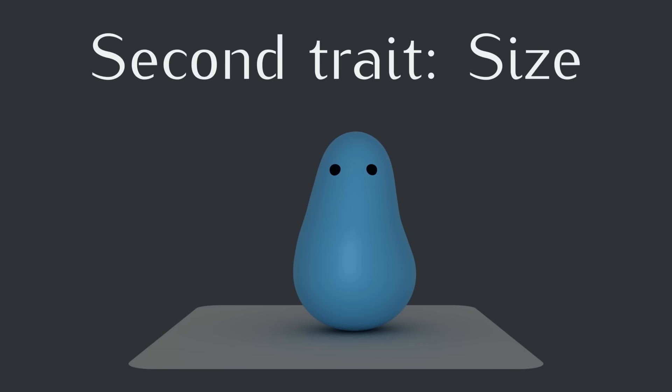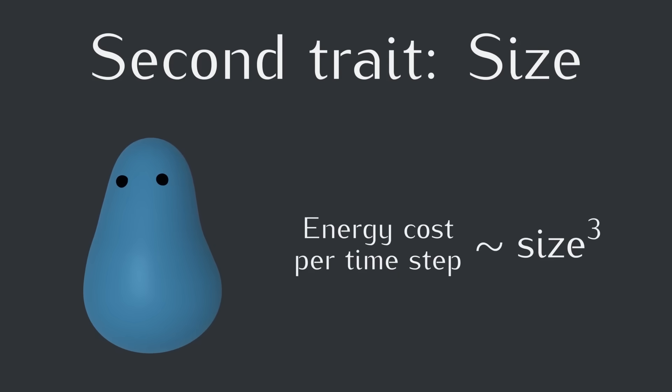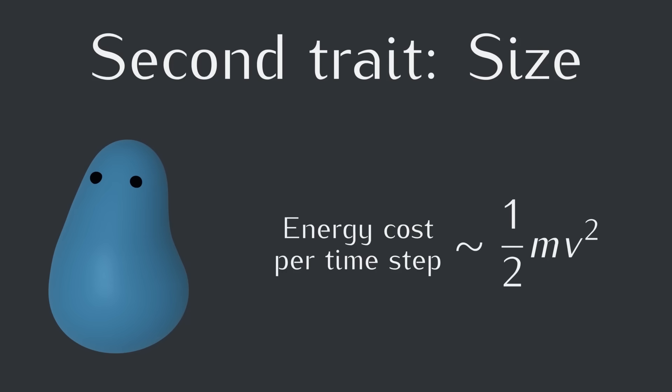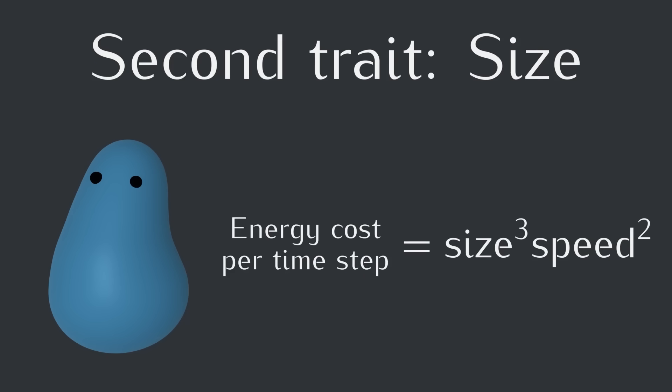The energy cost depends on the cube of a creature's size value. I could have picked any function for the energy cost I suppose, but I made it a cube because volume scales as the cube of length, and volume is closely linked to the mass a creature has to carry around. The total energy cost of a creature's movement each time step is equal to the cube of the creature's size times the square of the creature's speed from before. Which, you might notice, is reminiscent of the formula for kinetic energy.